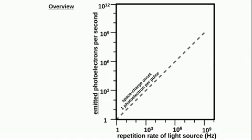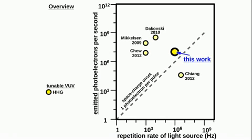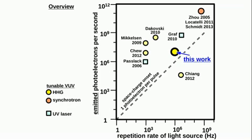In order to compare with other photoemission experiments, we present in this paper an overview. This summary shows the number of emitted photoelectrons per second as a function of the repetition rate of the light source.